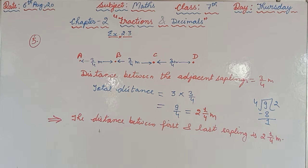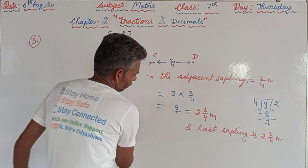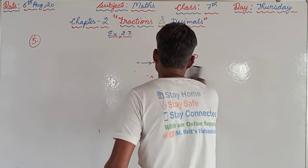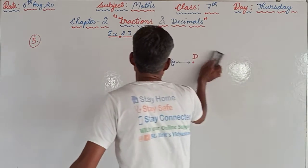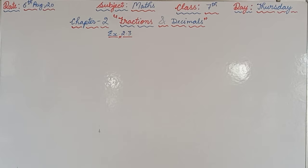I hope you have understood question number five. Now we will proceed to question number six. At the same time I am clearing the board, you should read question number six. Question number six: Libica reads a book for one and three-fourths hours every day, and she reads the entire book in six days. How many hours in all were required by her to read the book?